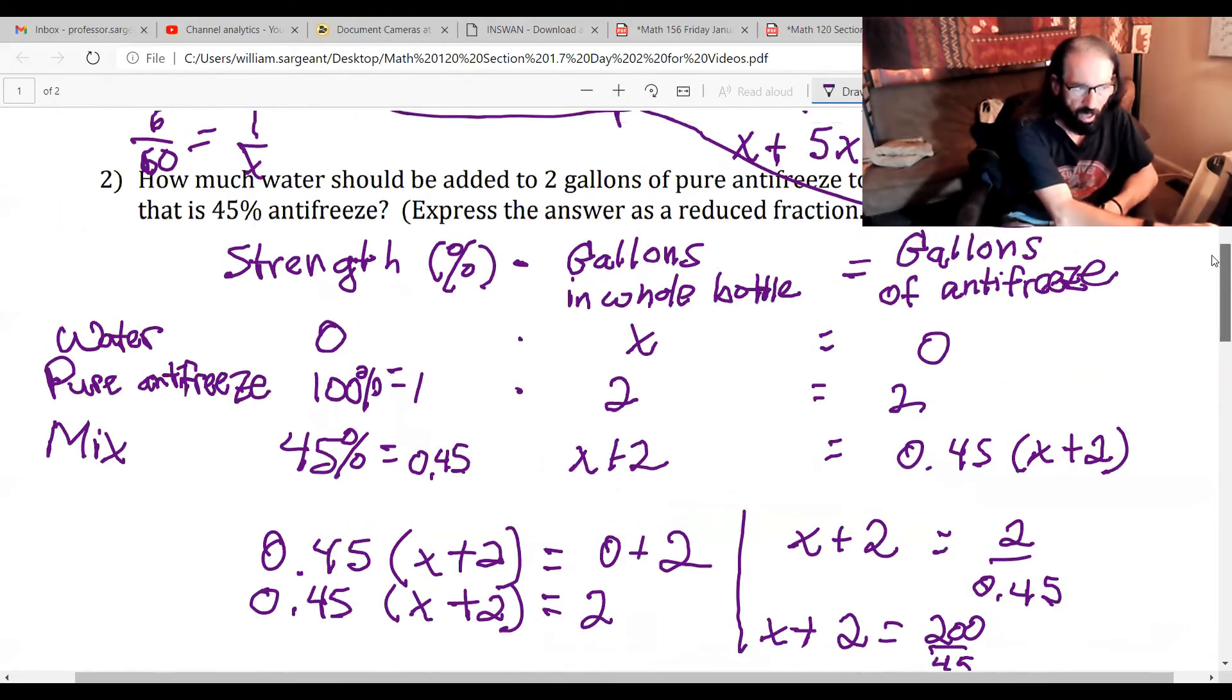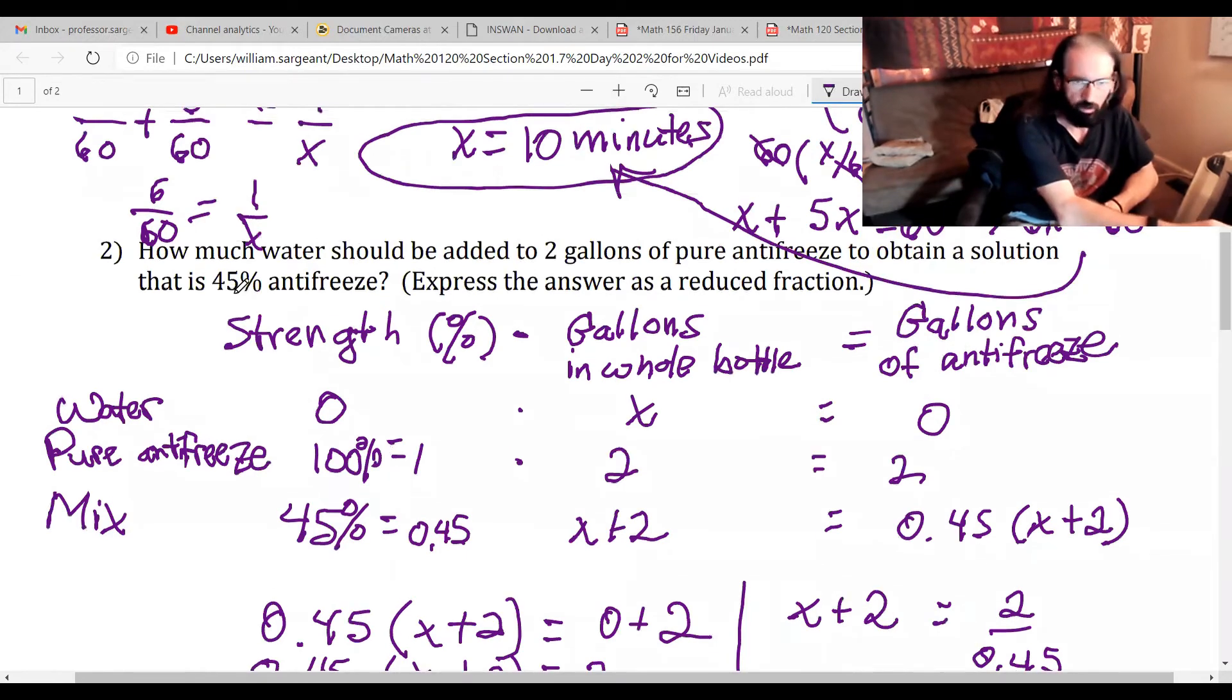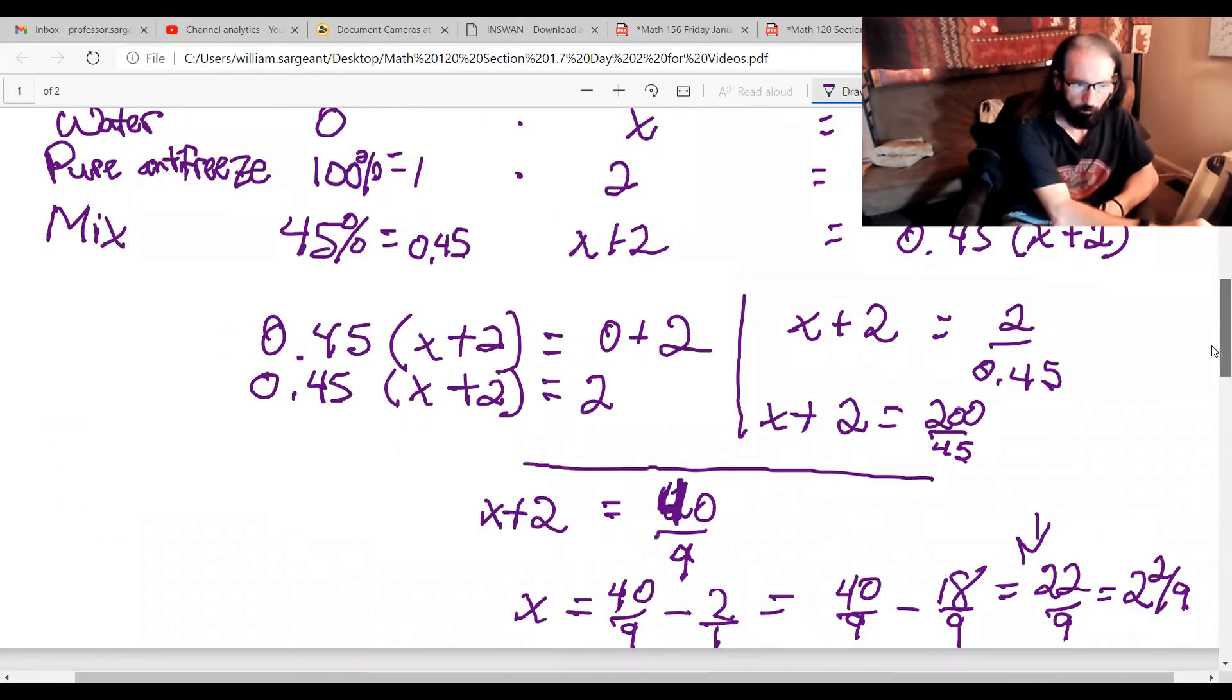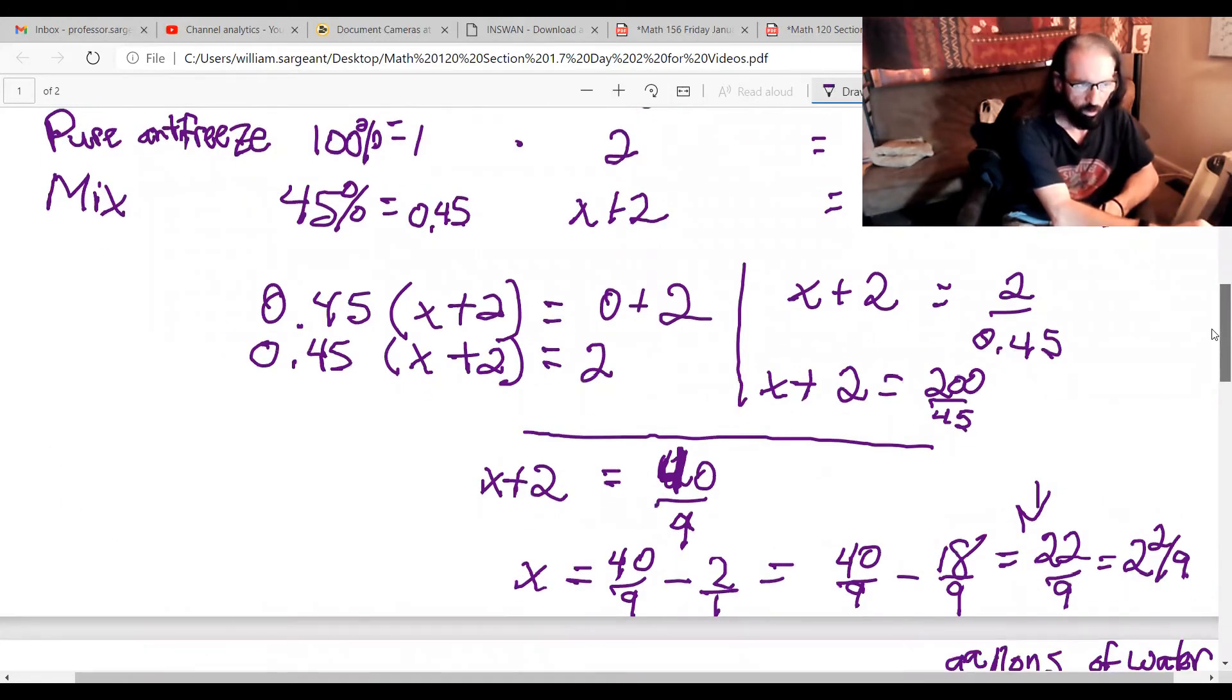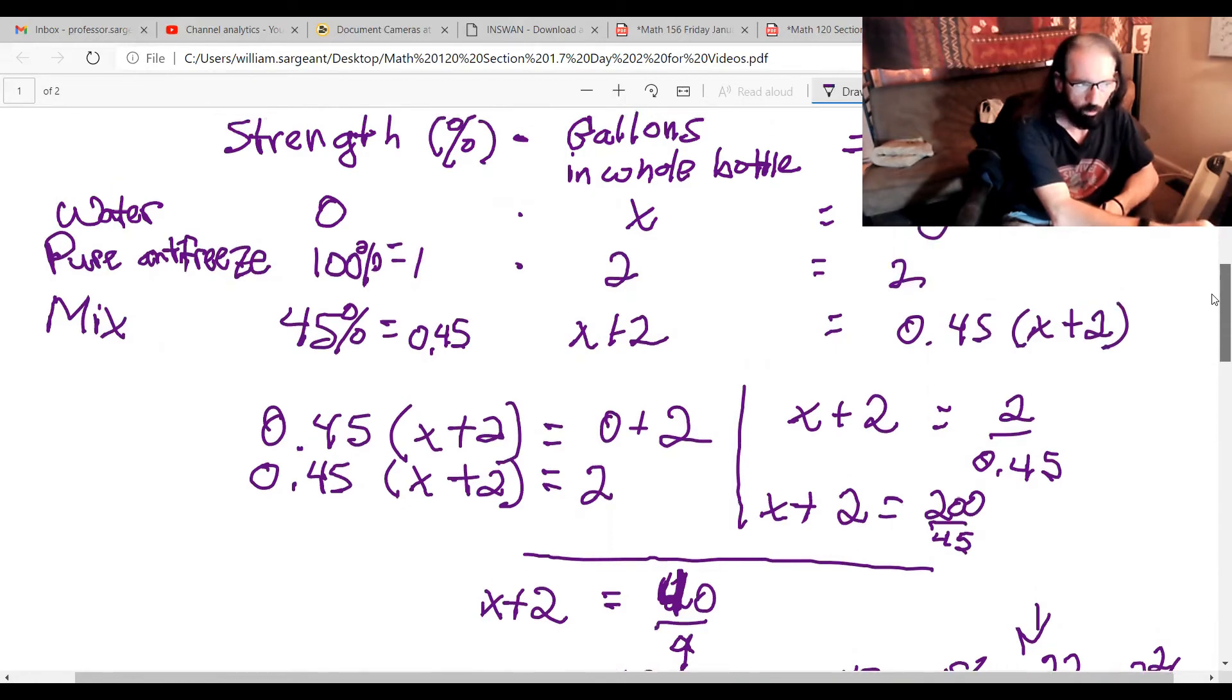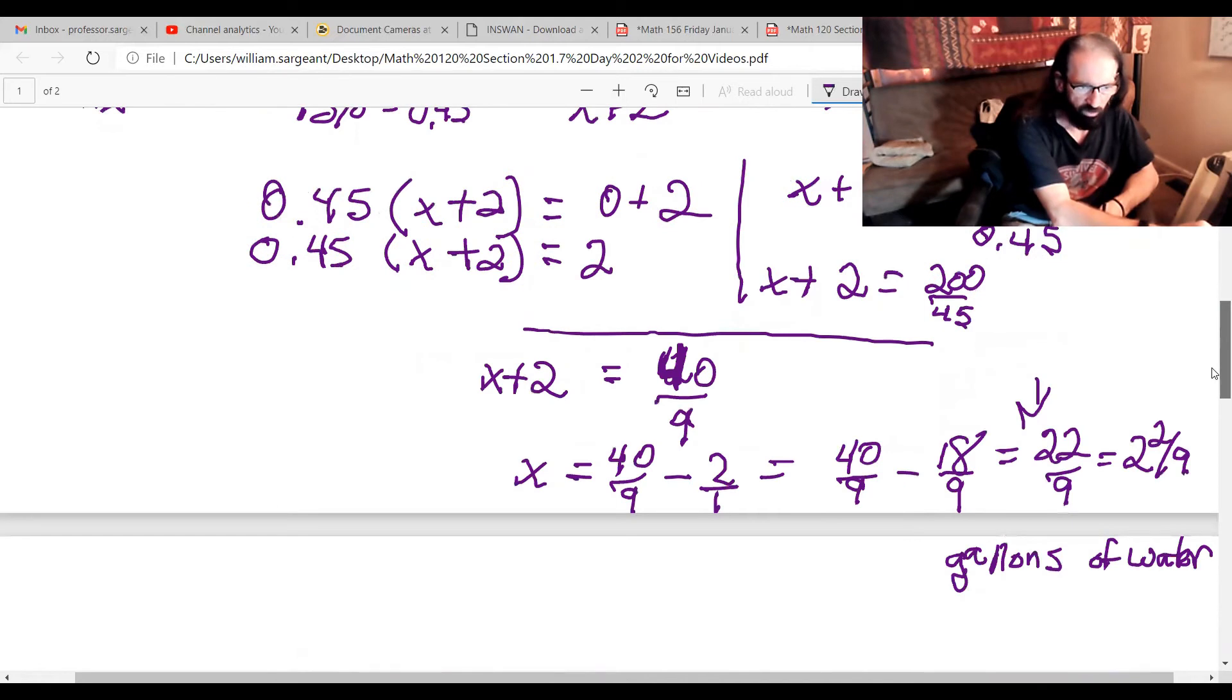You could have predicted that because 45 percent is closer to zero than it is to 100 percent, meaning we should have expected we would use more water than we did of pure antifreeze. We're using two ninths of a gallon more of the water than the antifreeze.